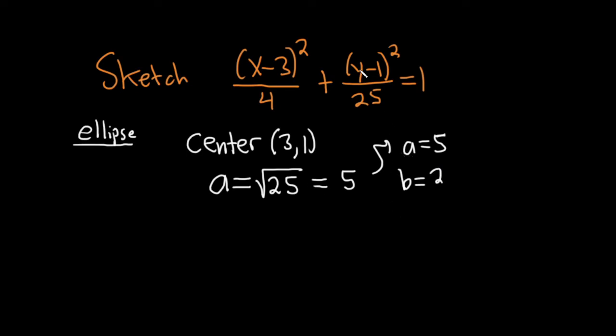Because the bigger number is under the y, the major axis of this ellipse is vertical. That means we're going to go up and down by a. If the bigger number was under the x, we would go left and right by a.